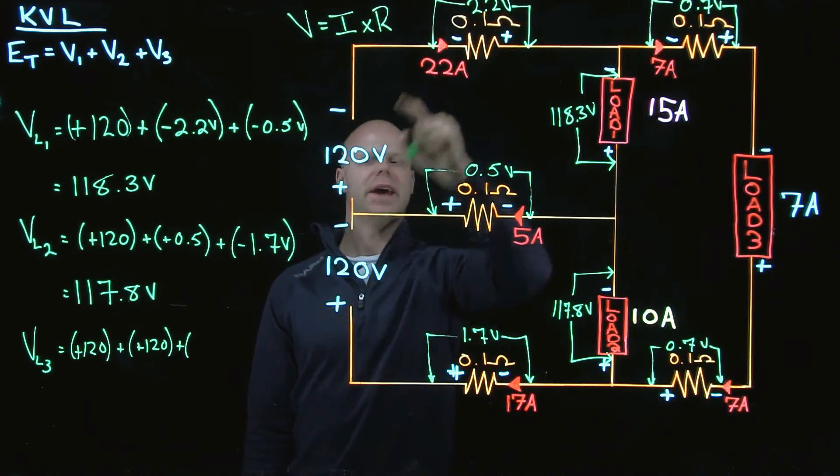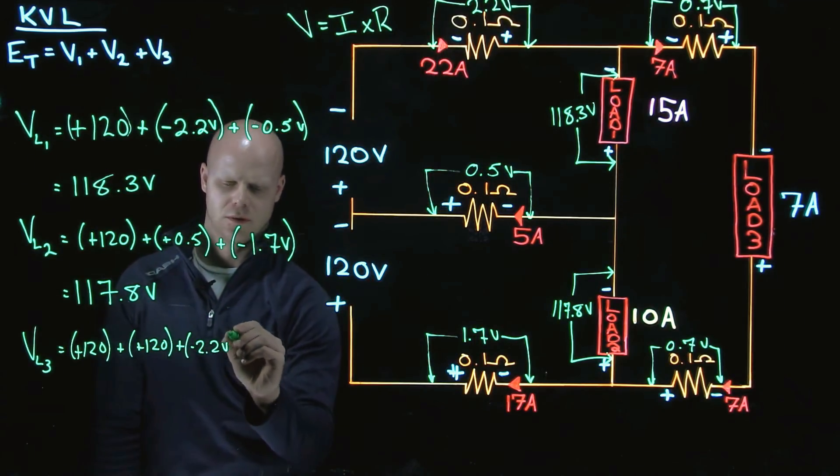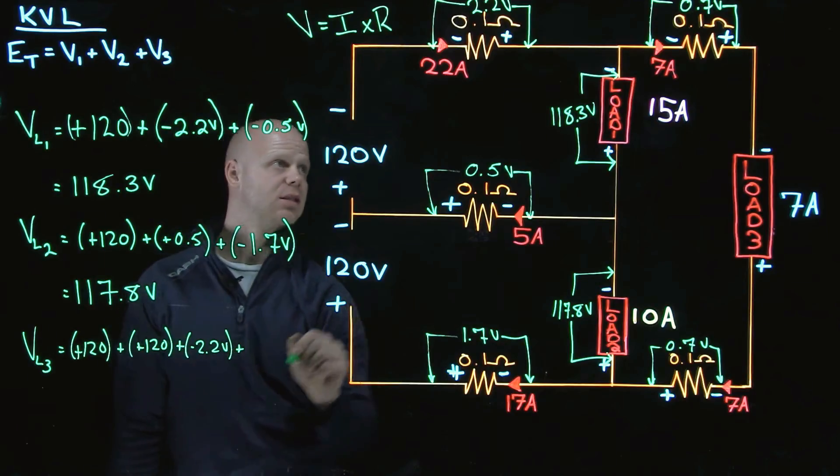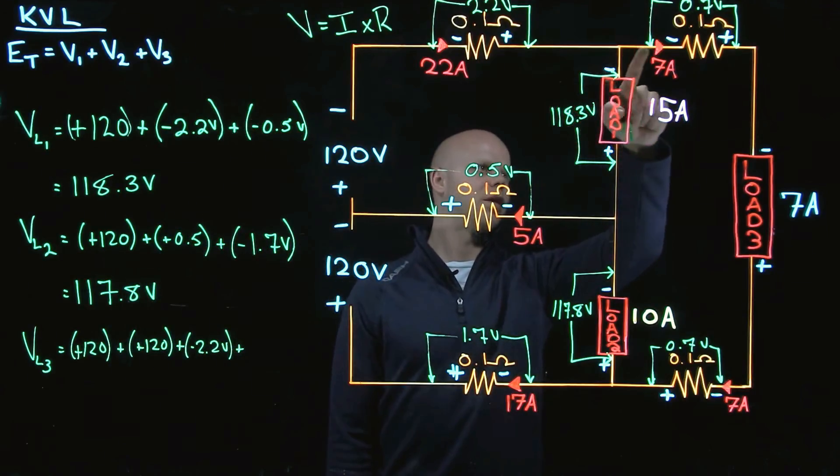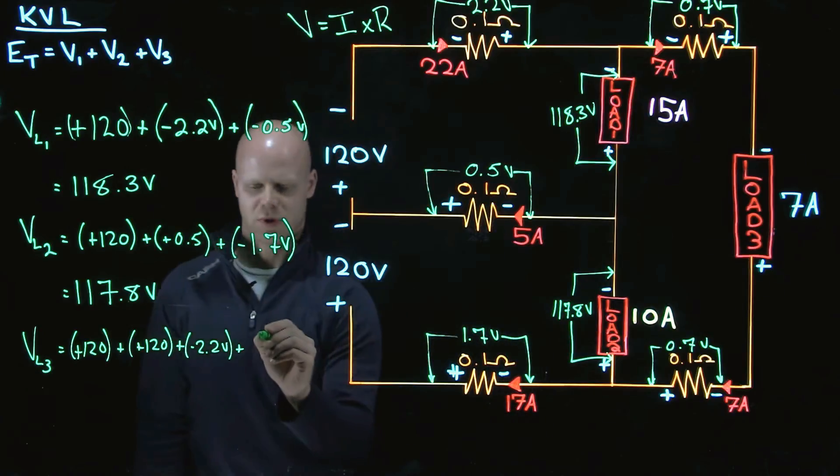Plus a negative 2.2 plus, and I am going to continue on this loop, a negative 0.7.